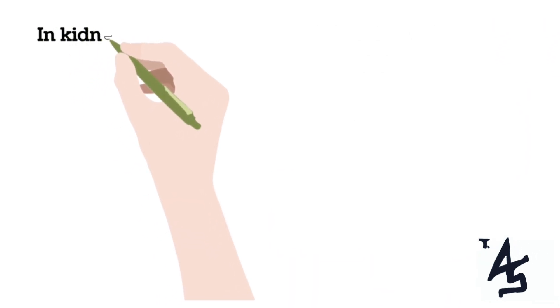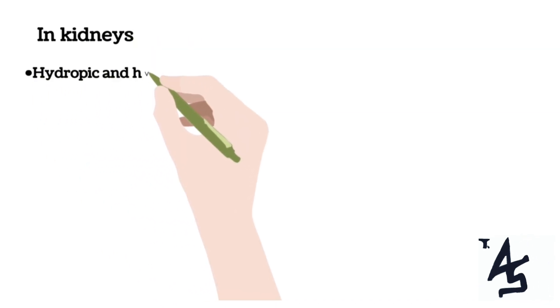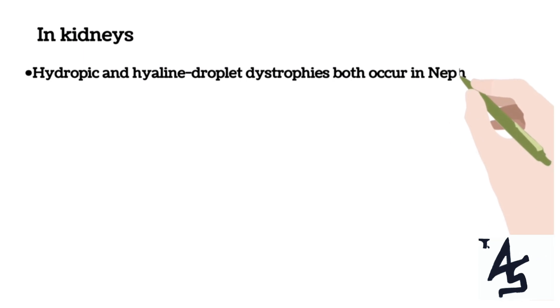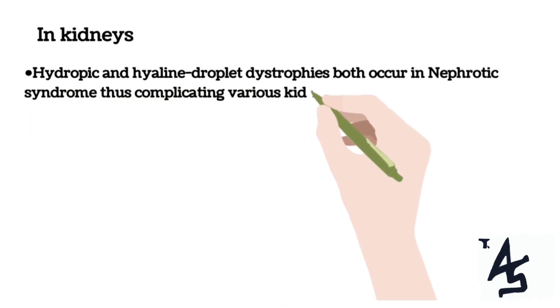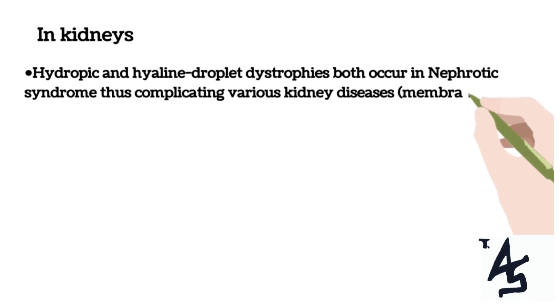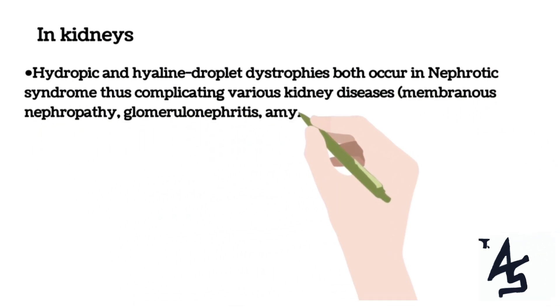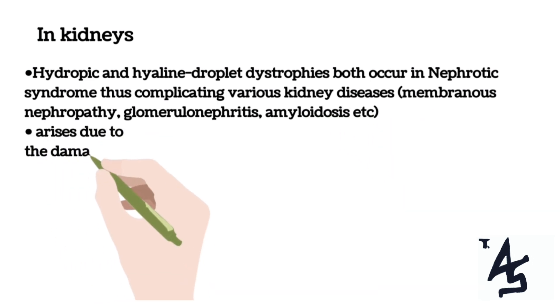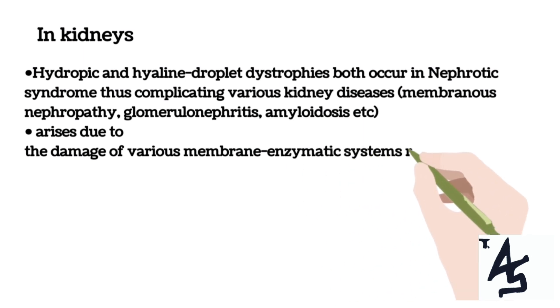Let's take an example of kidneys. Hydropic and hyaline droplet dystrophies occur in nephrotic syndrome, where massive proteinuria combined with edemas, hypo- and dysproteinemia, and hyperlipoproteinemia further complicates various kidney diseases like membranous nephropathy, glomerulonephritis, and amyloidosis. Hyaline droplet and hydropic dystrophy of the renal tubular epithelium in nephrotic syndrome arises due to damage of various membrane enzymatic systems responsible for the reabsorption of protein and water.